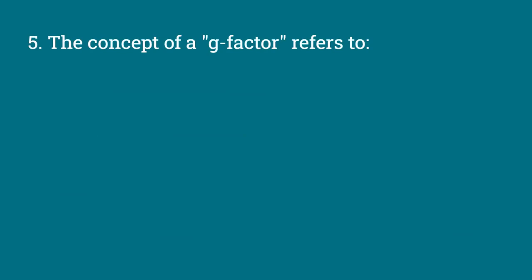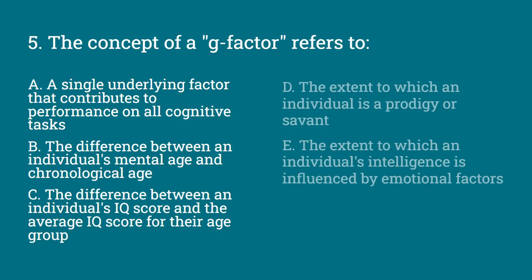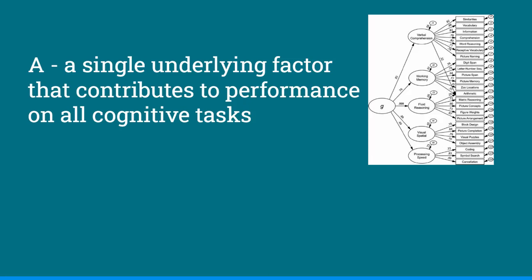The concept of a G factor refers to — options include: a single underlying factor that contributes to performance on all cognitive tasks; the difference between an individual's mental age and chronological age; the difference between an individual's IQ score and the average IQ score for their age group; the extent to which an individual is a prodigy or savant; or the extent to which intelligence is influenced by emotional factors. The answer is A, a single underlying factor that contributes to performance on all cognitive tasks.